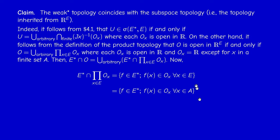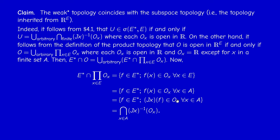By definition of the canonical injection J, F(x) is J_x(F). So F(x) belonging to O_x means F belongs to J_x^{-1}(O_x). Taking the intersection over x in A, we see that a basis element in the subspace topology equals a basis element in the weak star topology. Therefore, when we take unions we get the same result, and the two topologies are the same.